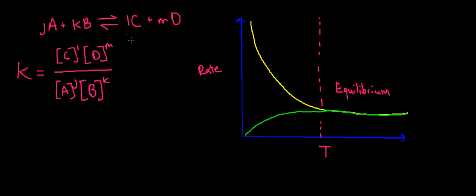A and B give C and D. But as my products start building up, the reverse reaction can start taking place. C and D can go back to A and B.